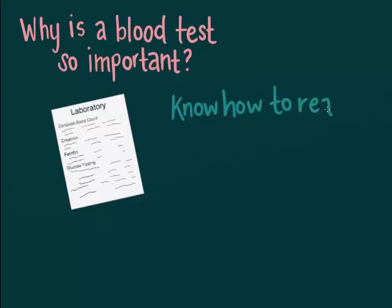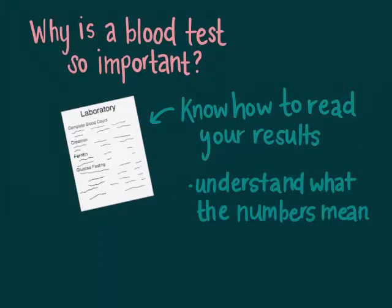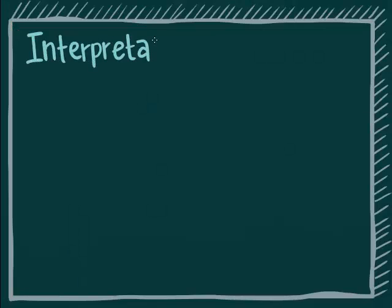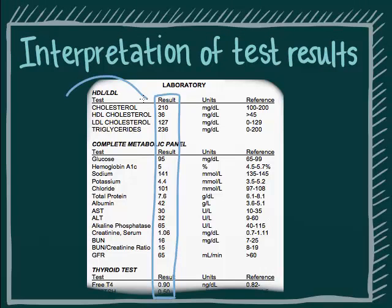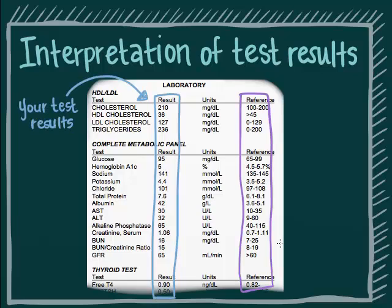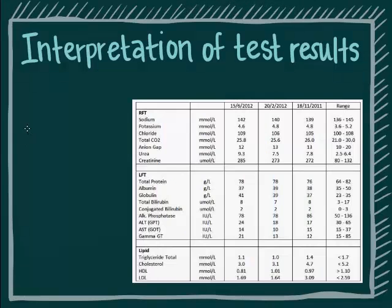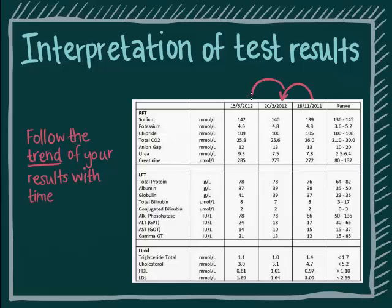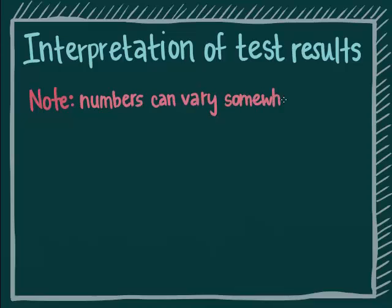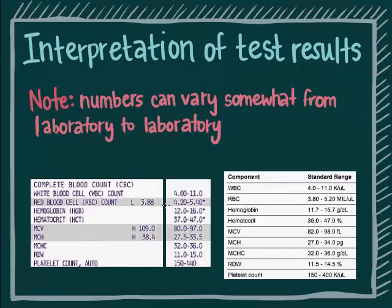Therefore, it is important for you to know how to read your results and to understand what the numbers mean. When interpreting test results, compare the numbers of your test results to the reference or normal ranges given. More importantly, follow the trend of your results over time for a more meaningful interpretation. Please note that the numbers can vary somewhat from laboratory to laboratory, so be sure to always use the reference numbers given by the specific laboratory where your test is done.